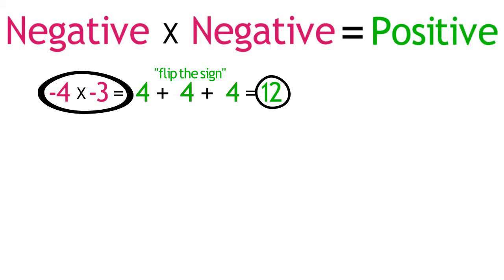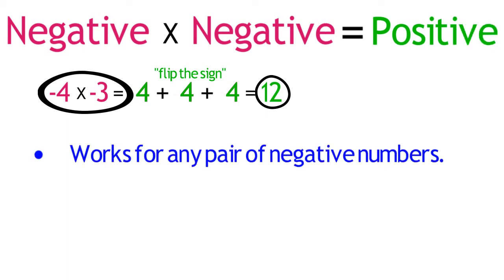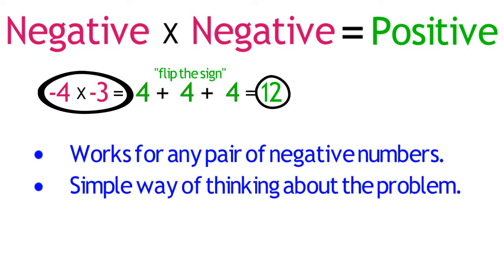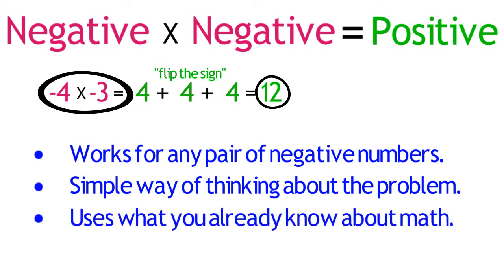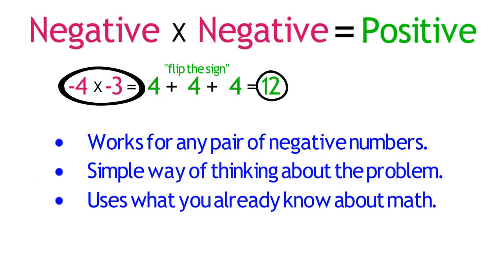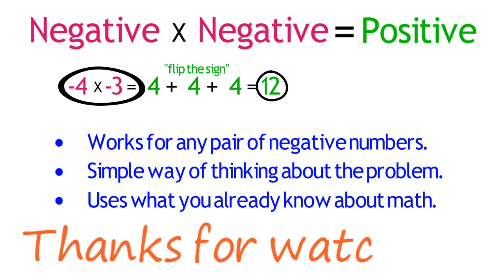Two negatives equal a positive. This procedure will work for any pair of negative numbers. And I think it's one of the simplest ways of thinking about this idea of multiplying two negatives to get a positive in a way that uses the information you already probably feel pretty comfortable with in multiplication, repeated addition and the commutative property. I hope you found this explanation useful and thanks for watching.